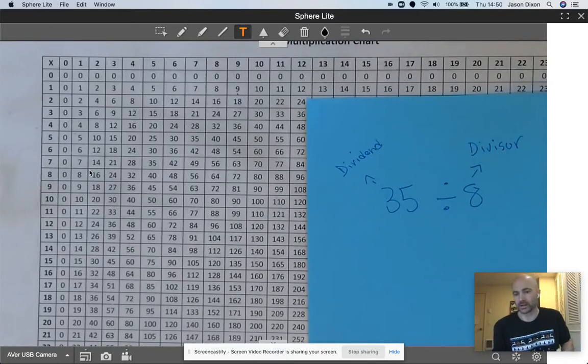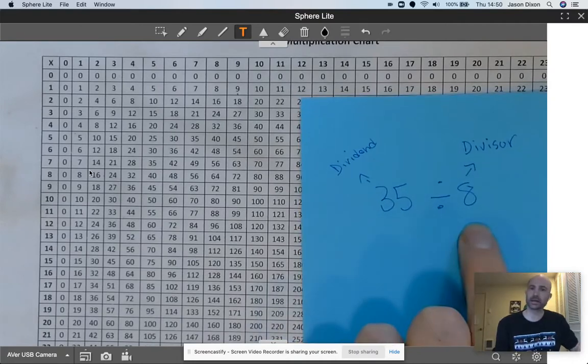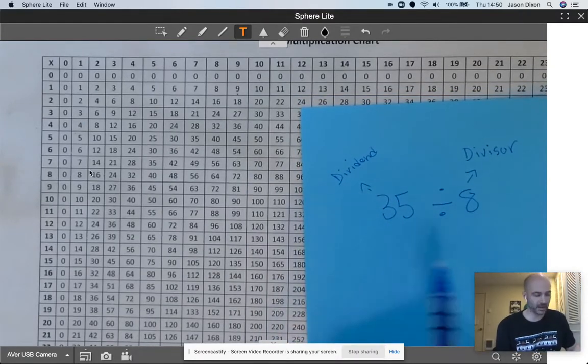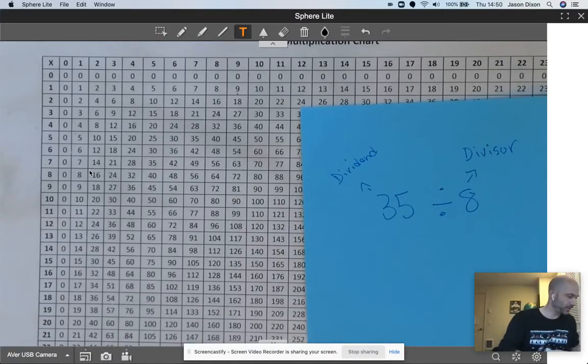So I've written the problem down. It is 35 divided by 8, where 35 is the dividend and 8 is our divisor. So this is the number we are dividing and this is the number we are dividing by.